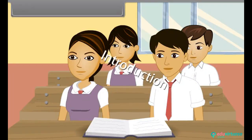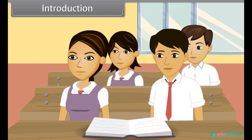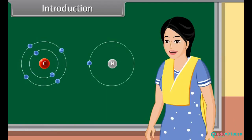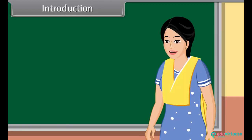Good morning teacher. Good morning students. Today we learn organic chemistry. What is organic chemistry? Organic chemistry is the branch of chemistry that involves the study of carbon and hydrogen containing compounds. How are the carbon atoms attached? The carbon-carbon bonds can be single, double, or triple bonds.